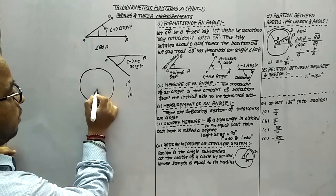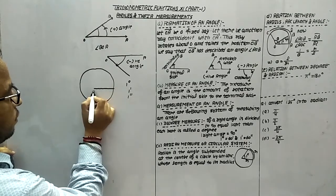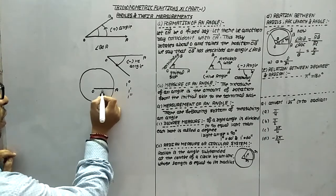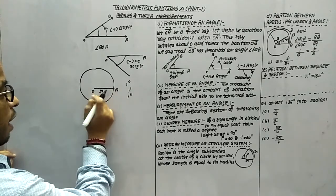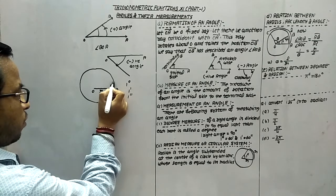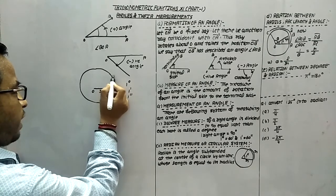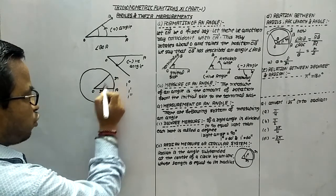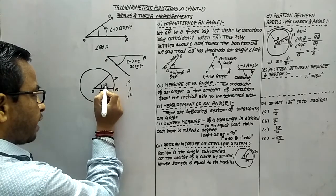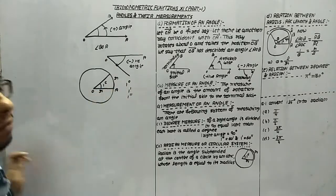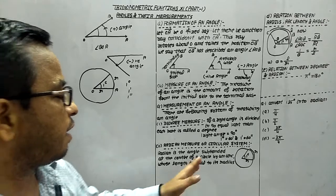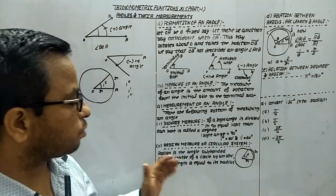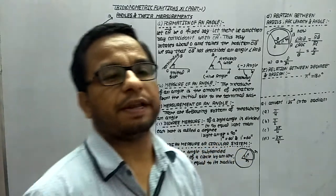What is the meaning of one radian? Suppose this is the radius R. And if we have an arc whose length is also R, then whatever angle is formed is known as one radian. It means radian is the angle subtended at the center of a circle by an arc whose length is equal to its radius.